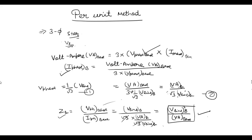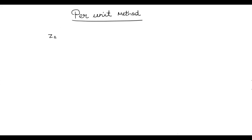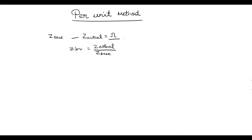This is the general formula for a three-phase star-connected system: ZB = V_line_base² / VA_base. So now we can calculate the base value of impedance, and if Z_actual in ohms is given, we can find its per unit value by dividing it by ZB.